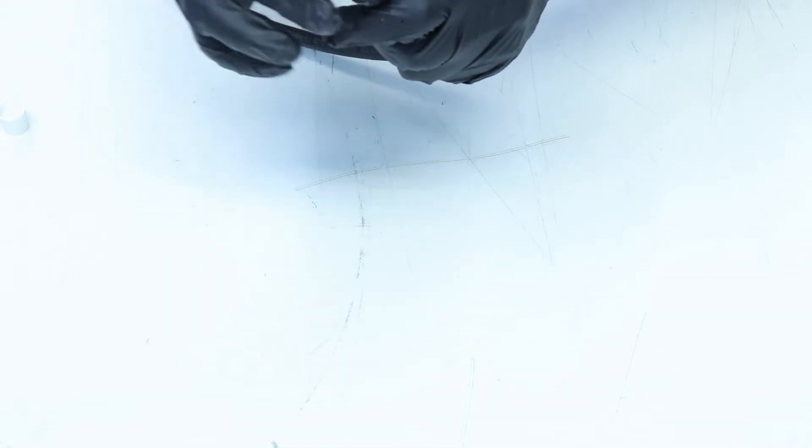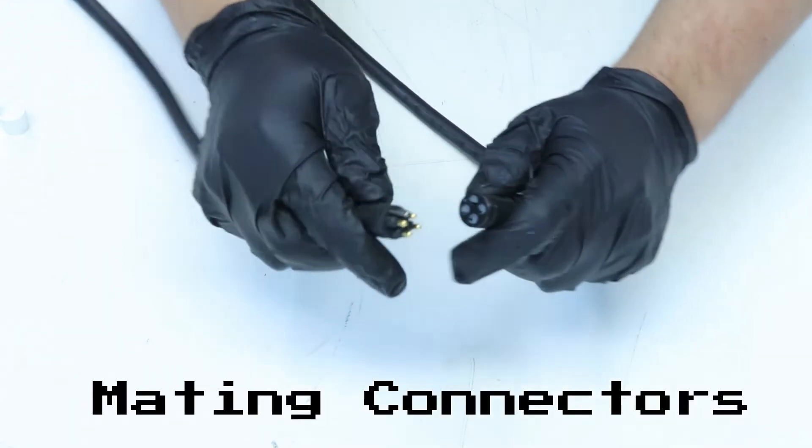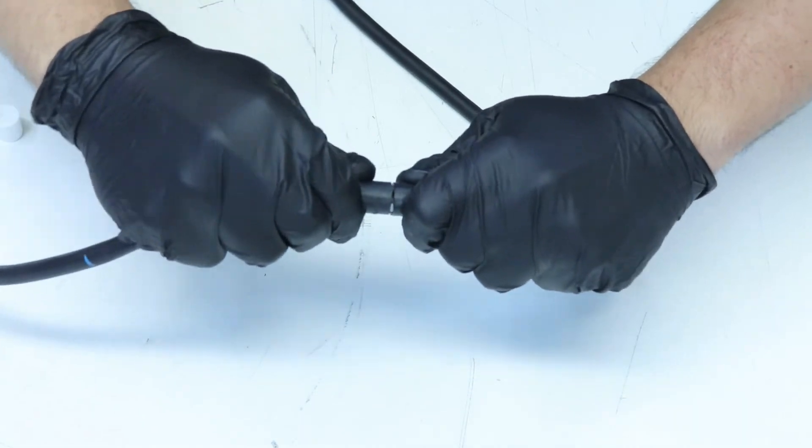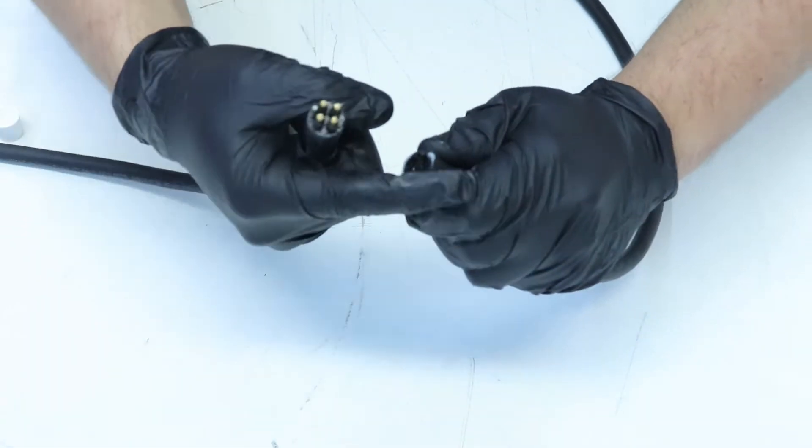To re-grease a connector, start with the female connection and apply grease to each opening evenly. Push the connectors together until excess grease pushes out of the sides.